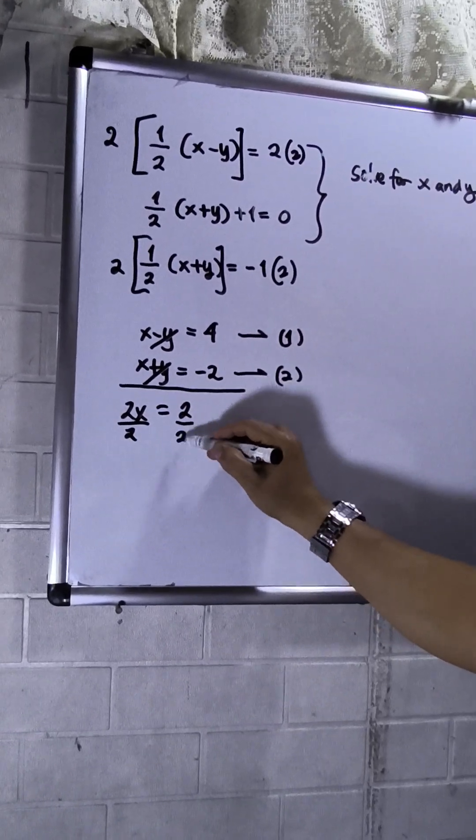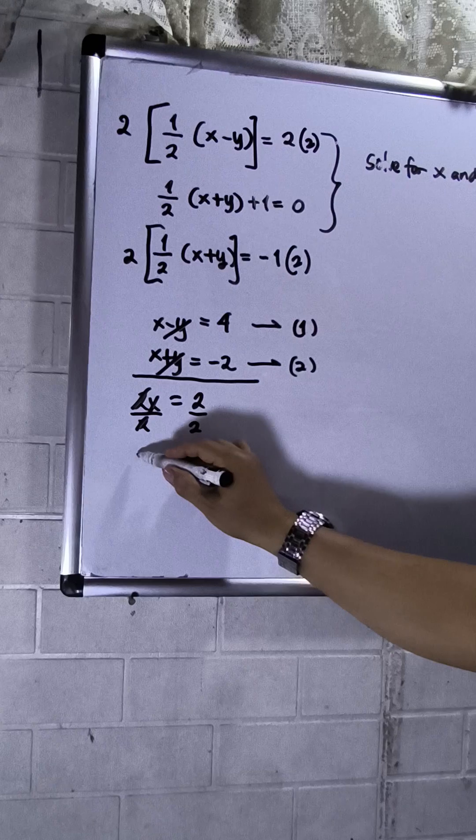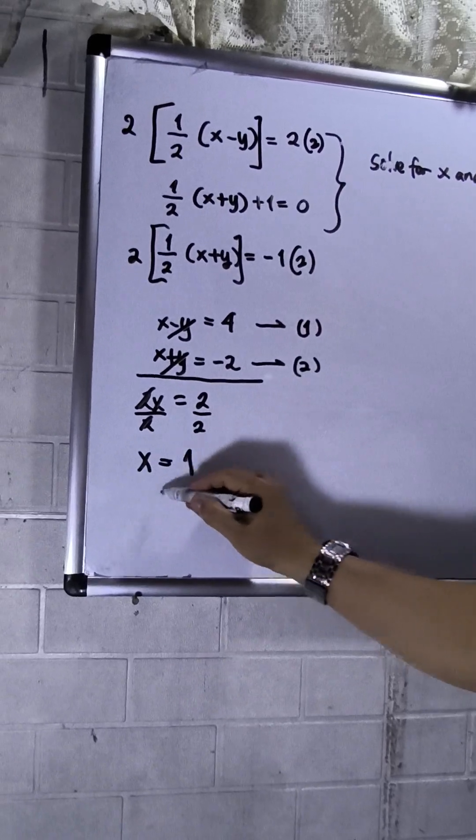Then to solve the value of x, divide 2 both sides. 2 will be crossed out. So x equals positive 1.